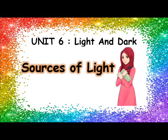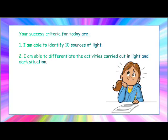Unit 6: Light and Dark — Sources of Light. Your success criteria for today are: I am able to identify 10 sources of light, and I am able to differentiate the activities carried out in light and dark situations.